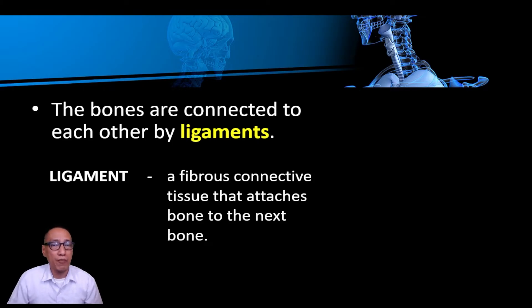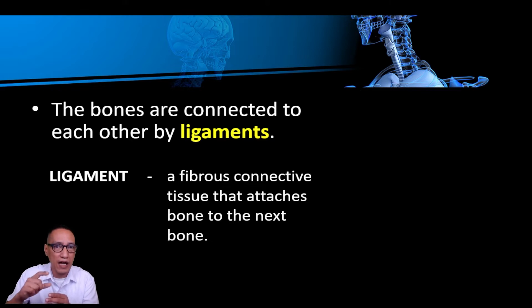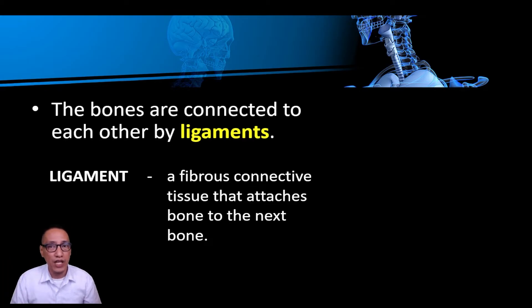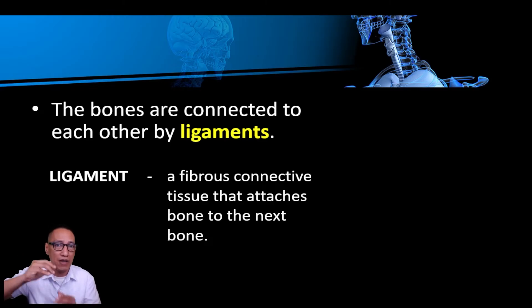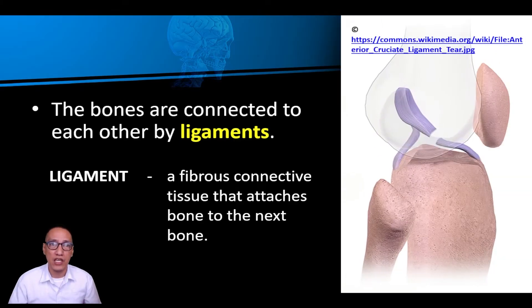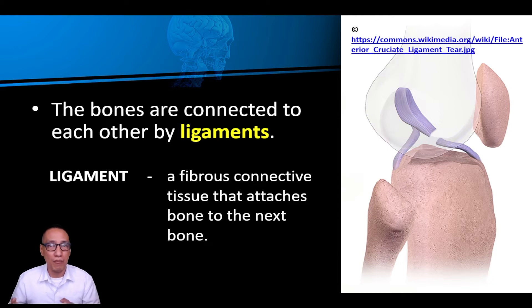The bones are connected to each other by ligaments. Para magkadikit ang mga buto, merong parts sa ating anatomy na nagdudugtong sa kanila — ang tawag doon ay ligament. A ligament is a fibrous connective tissue that attaches bone to the next bone. Pag sinabing fibrous, may fiber siya — matibay at flexible. So ang tawag sa nagdudugtong sa mga buto sa isa't isa ay ligament.